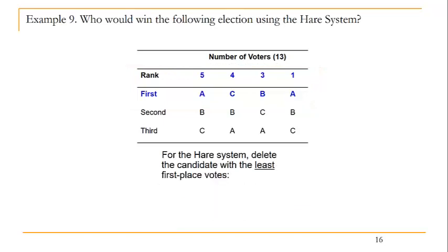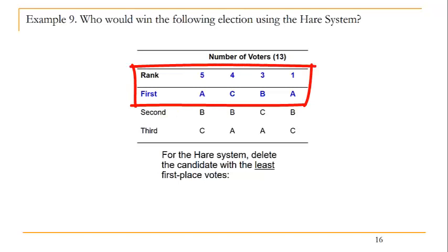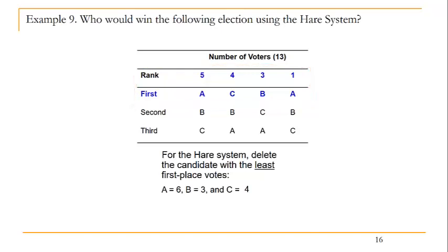Let's look at another example. Here we have 13 voters again choosing between candidates A, B, and C. We focus again just on those first place votes. Candidate A receives six first place votes, candidate B receives three, and candidate C receives four. Since candidate B receives the least number of first place votes, we would delete candidate B and go with who remains — candidates A and C.